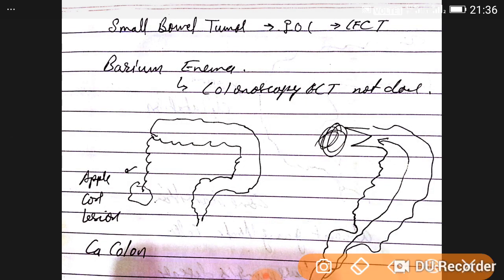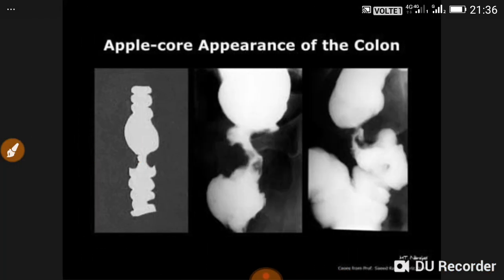then only a little core is present. So this is the core. Apple core—because cancer is the kind of disease which eats everything. So apple core lesion. Now see here the apple core appearance of the colon on radiology of colon cancer.